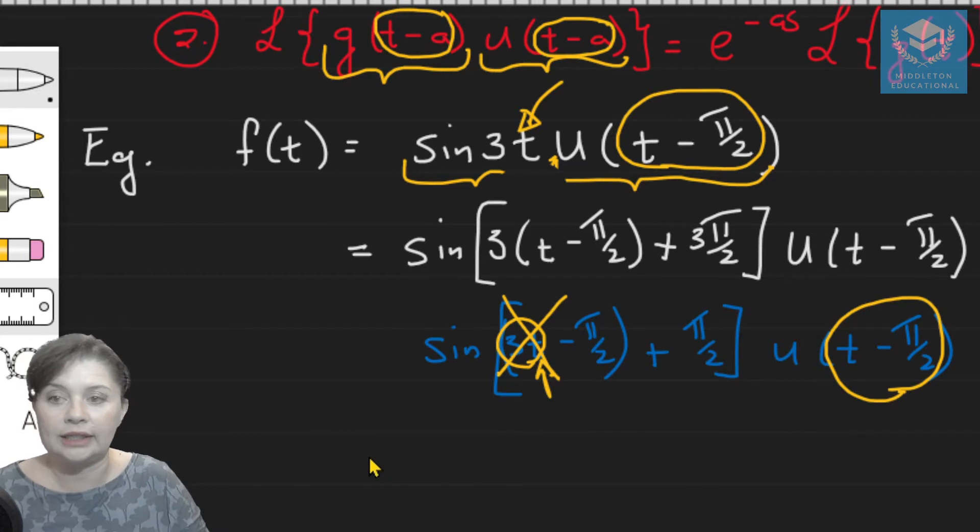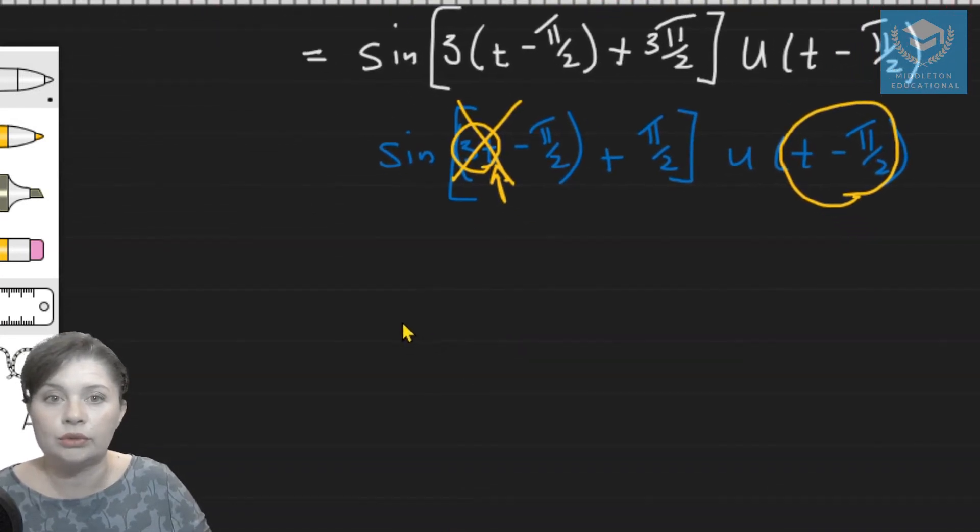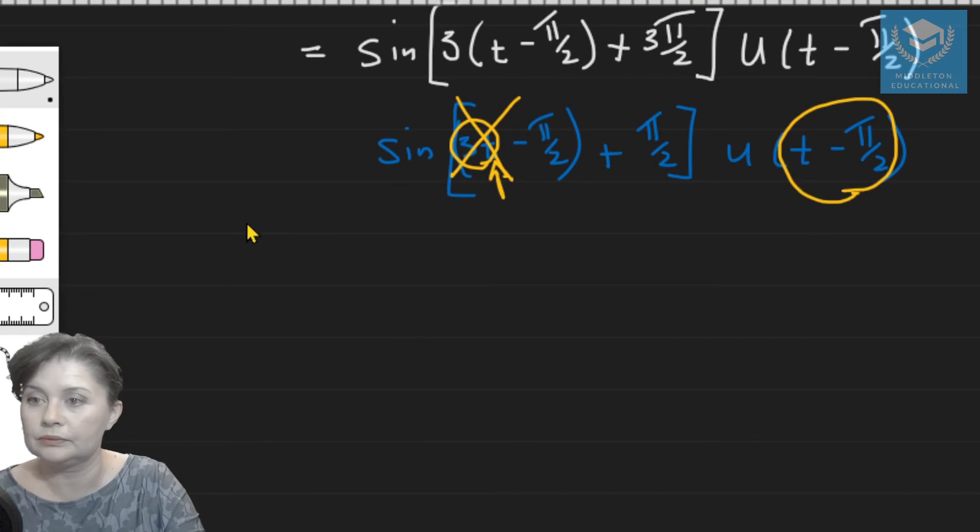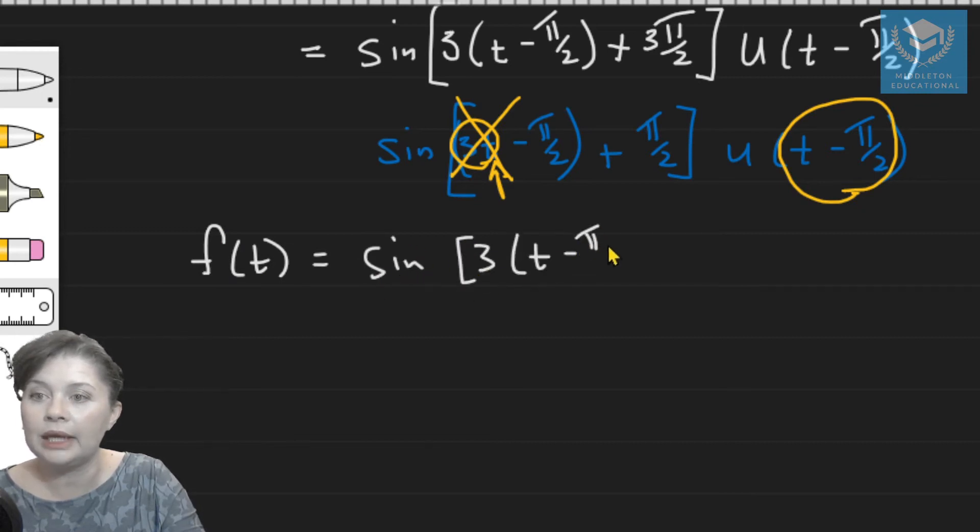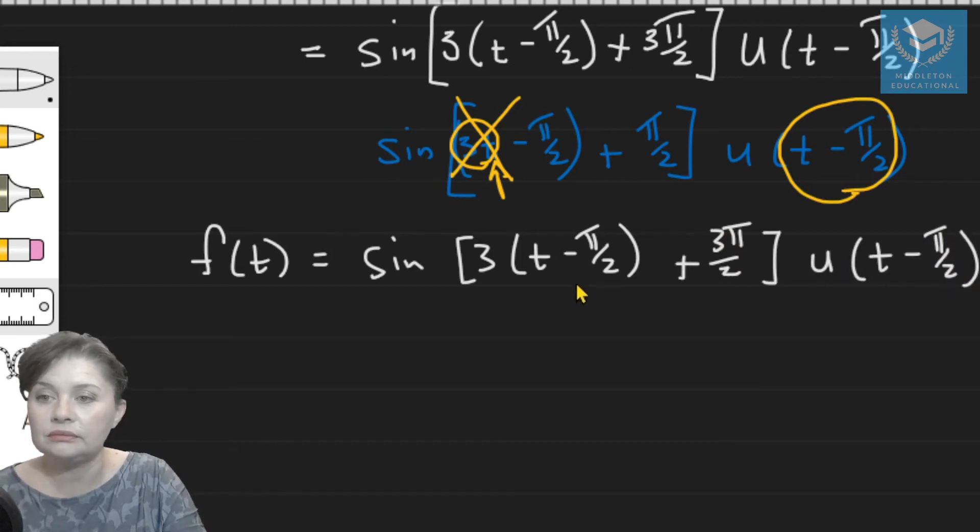So let's write out what we've got. So we now have that f(t) equals sine 3(t minus pi over 2), which is the form that we want, 3 pi over 2 times our Heaviside step function. But we can't work with this as is. So this is, in fact, a compound angle. So you can apply the compound angle formula for your trigonometry from trigonometry.